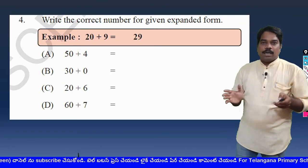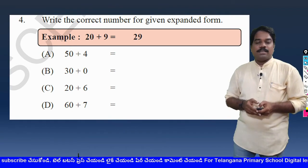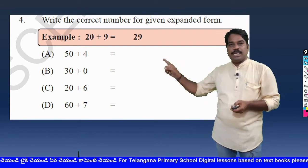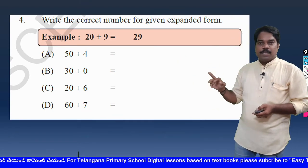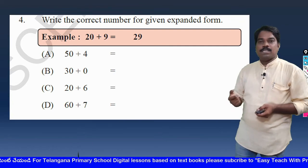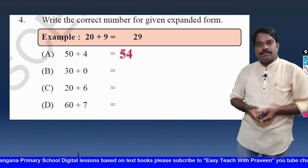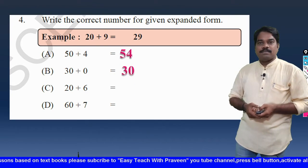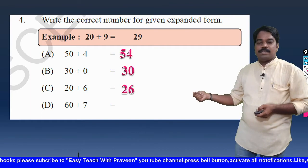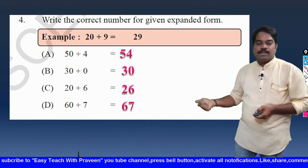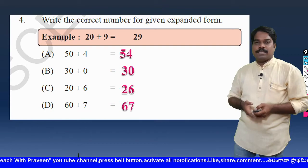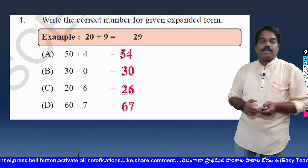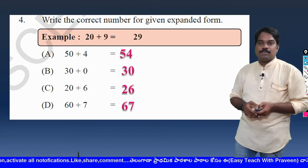Now write the correct number for the expanded form. By example: 20 plus 9 equals 29. Now: 50 plus 4 equals 54 automatically; 30 plus 0 equals 30; 20 plus 6 equals 26; and 60 plus 7 equals 67 — because 60 means 6 tens, so 67. In this way we have to write the expansion forms and identify the correct numbers from the expanded forms.